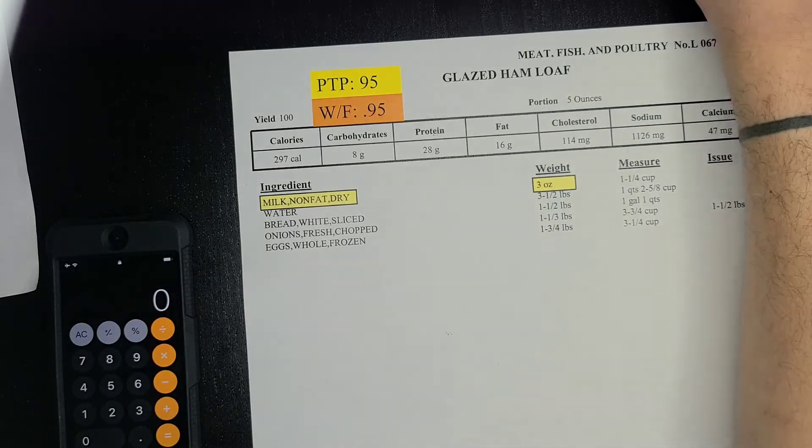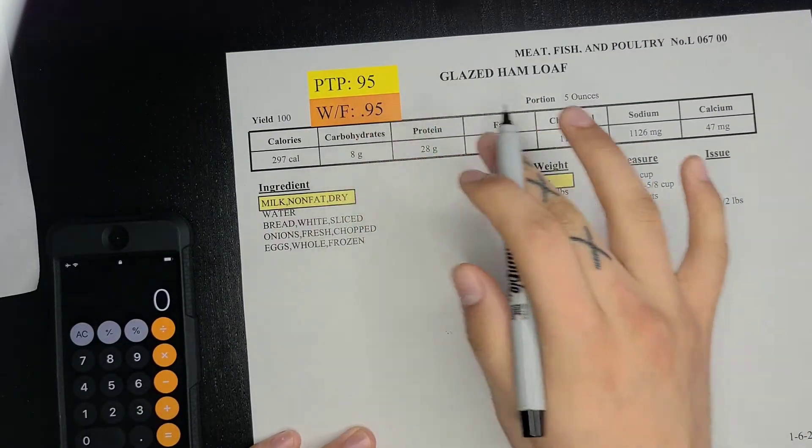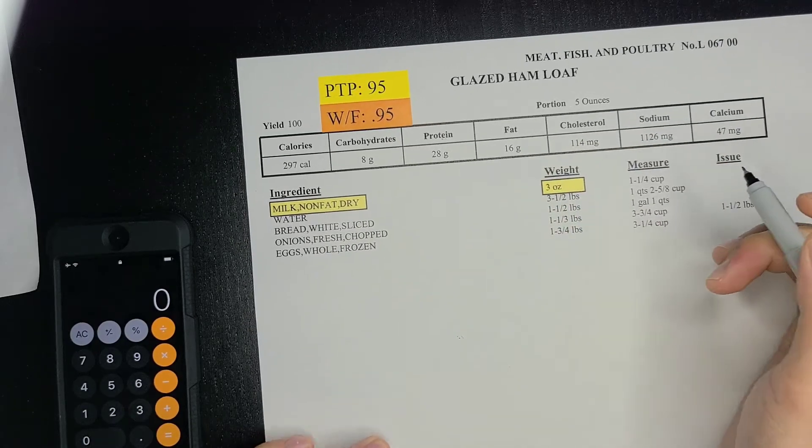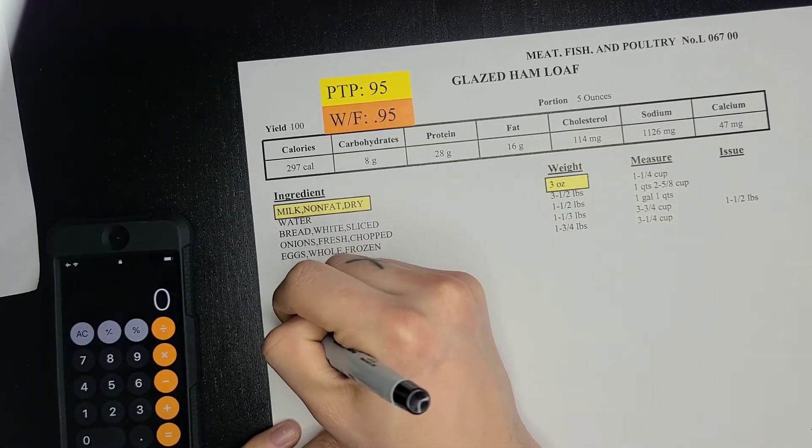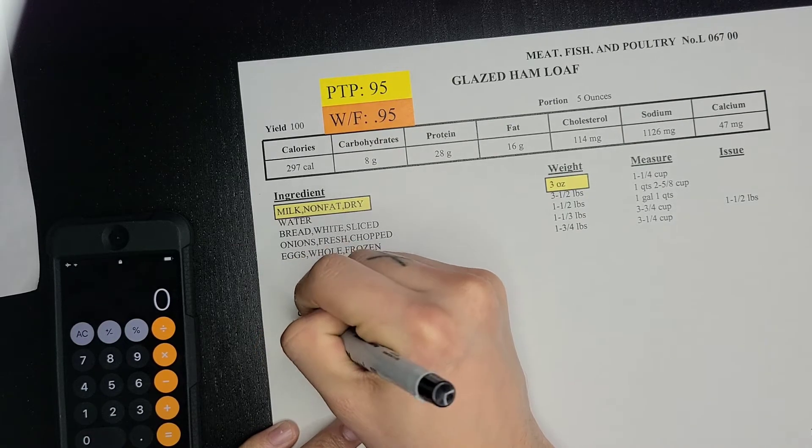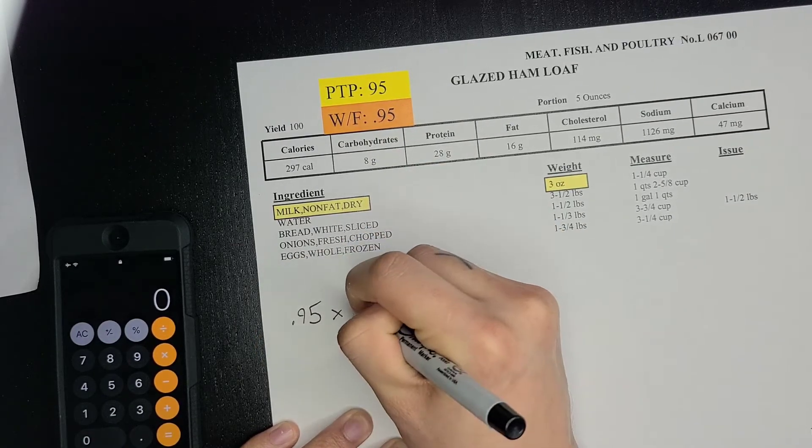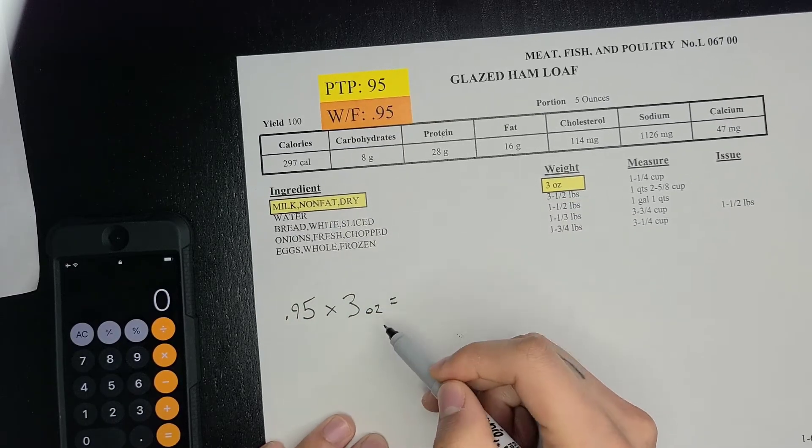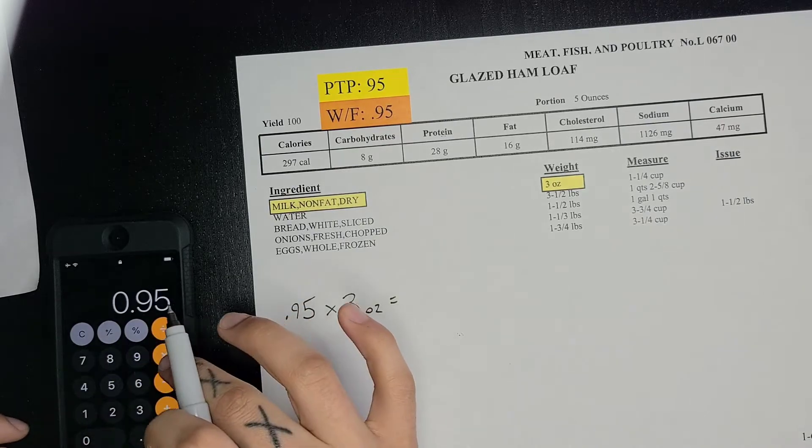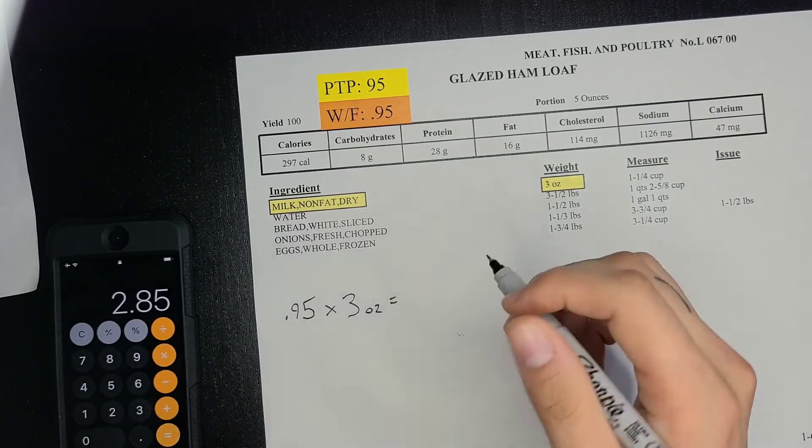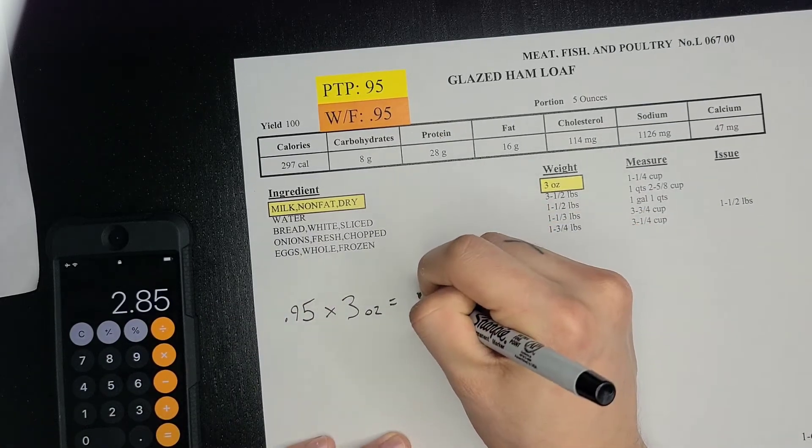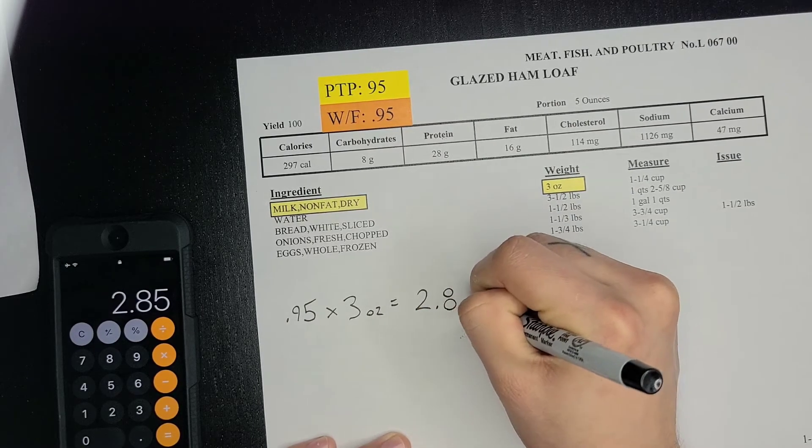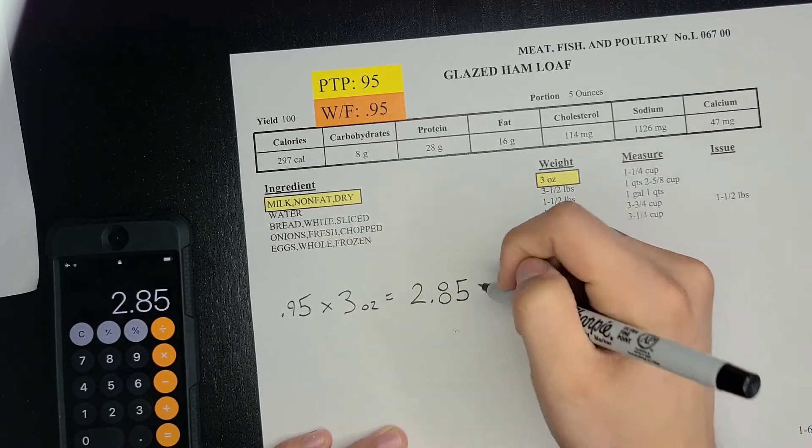Multiply your working factor by all these ingredients in order to get your new weight and measure. So 0.95 times your three ounces—make sure you always label everything—0.95 times three equals 2.85 ounces.